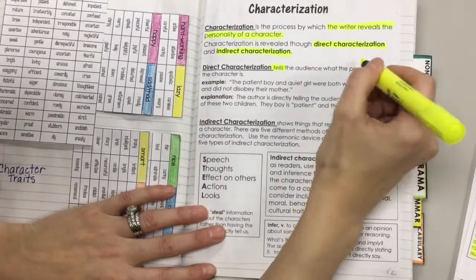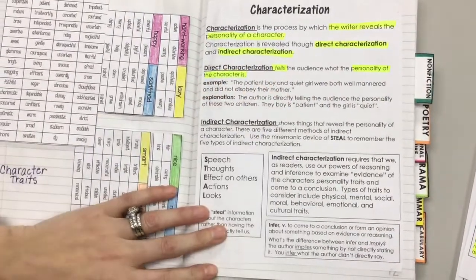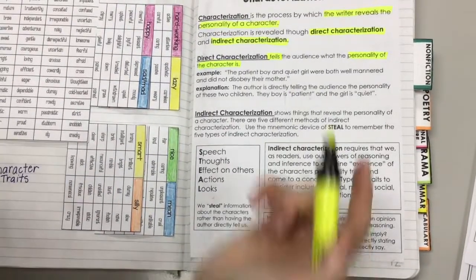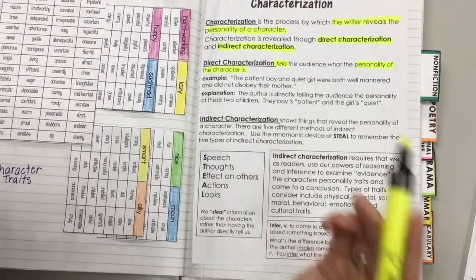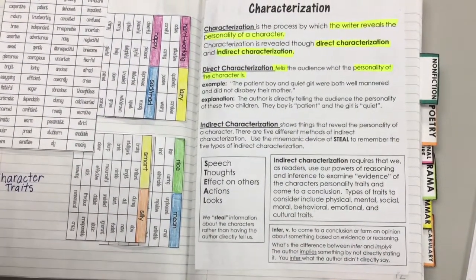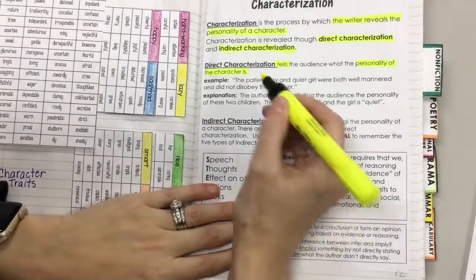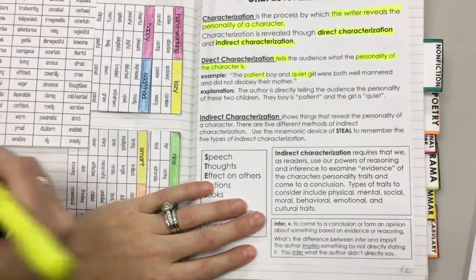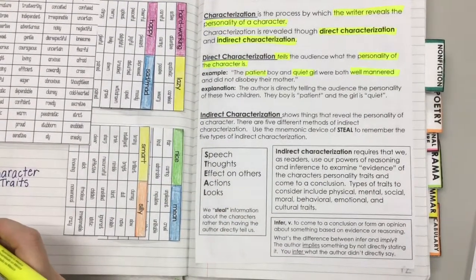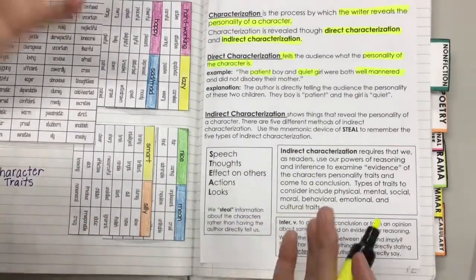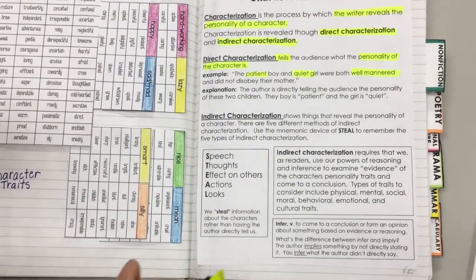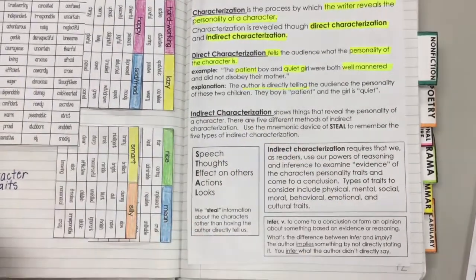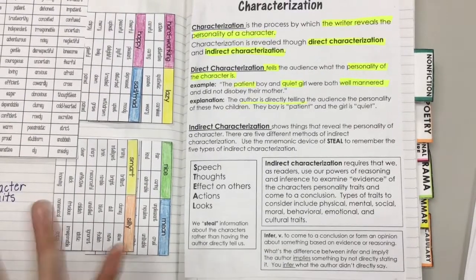This is when the author literally comes right out and says who they are or what they look like. For example: the patient boy and quiet girl were both well-mannered and did not disobey their mother. The author is coming directly out and saying the boy is patient, the girl is quiet, and they are both well-mannered. They're not making you, the reader, figure it out. They come straight out and tell you. The key is the author is directly telling the audience.